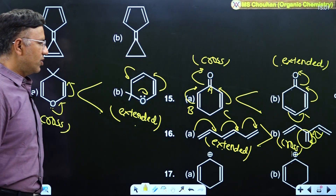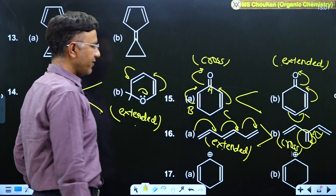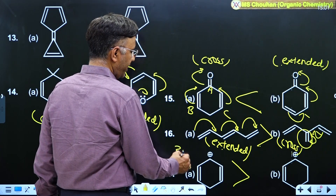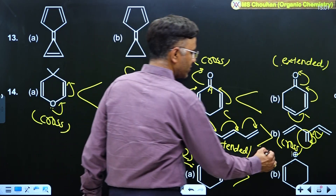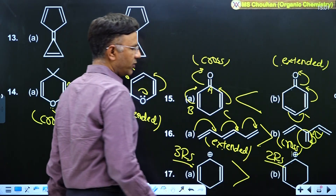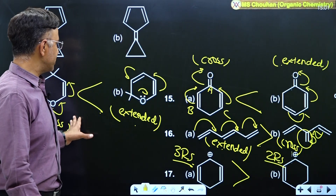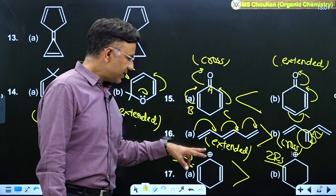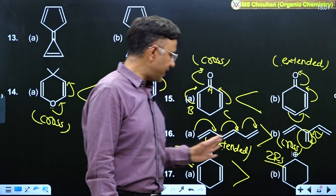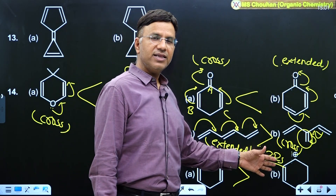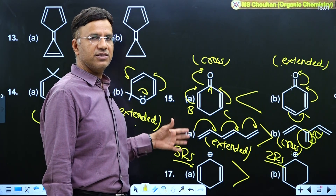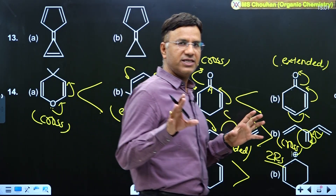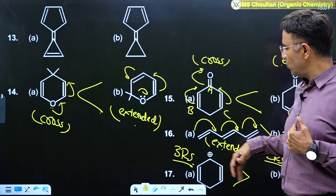In example 17, molecule A has more resonance energy than B because A has three RS while B has only two RS. The concept of extended and cross conjugation is not applicable here because the number of RS is different between the two molecules. The concept applies only when molecules are different but have the same number of RS — otherwise, more RS means more stability.